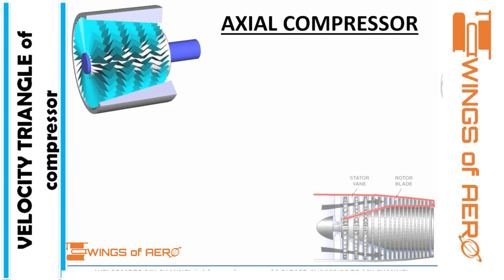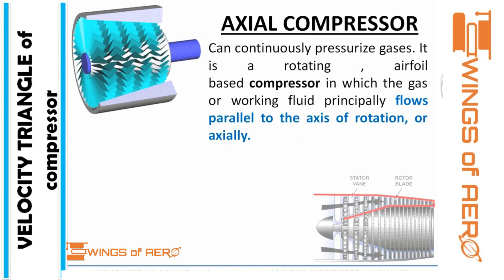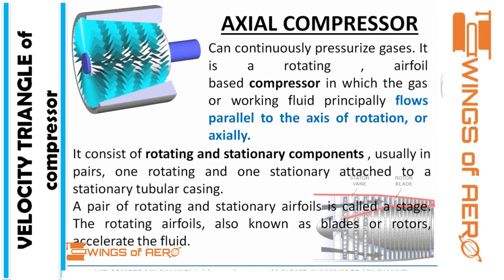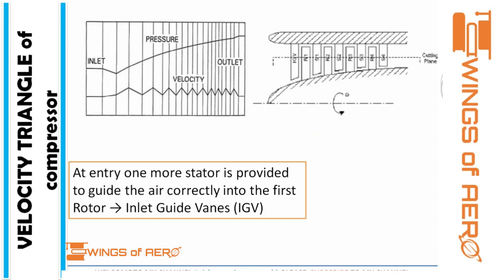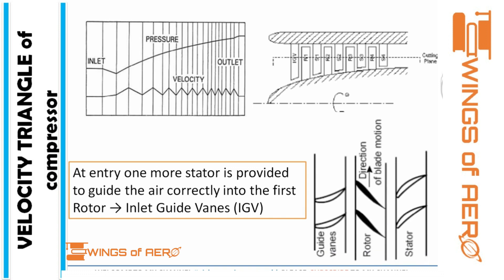First, let me give an intro about axial compressors. It is a compressor which pressurizes gases by continuously rotating airfoil-based blades, working on the principle of flow parallel to the axis of rotation — axially. It consists of rotating and stationary components: the rotating component is called a rotor and the stationary component is known as a stator. It has three basic applications: industrial, aerospace, and research. You can see the table displayed on your screen showing efficiency per stage. The rotor directs air to flow in the correct direction, which is why it is known as an inlet guide vane.